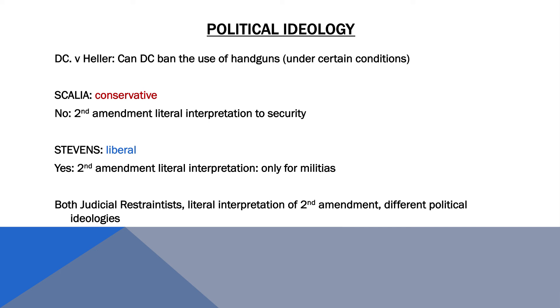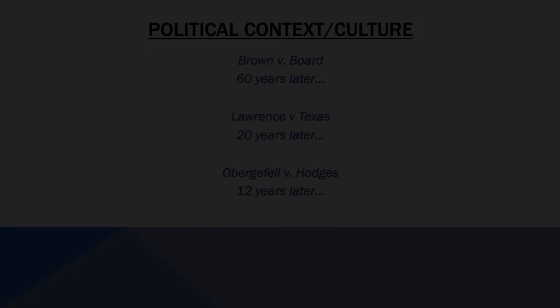Justice Scalia, a conservative restraintist, argued that Washington, D.C. did not have the authority to ban handguns because it was a violation of the Second Amendment — the right to bear arms. However, Justice Stevens, a liberal restraintist, argued that D.C. did have the authority to ban handguns because the Second Amendment specifically says the right to bear arms is reserved for only militias. So we have two justices with the same judicial philosophy, even using the same constitutional amendment as the basis of their argument, but coming to very different conclusions. The disparity between the two can really only be explained by a divergence of political ideology.